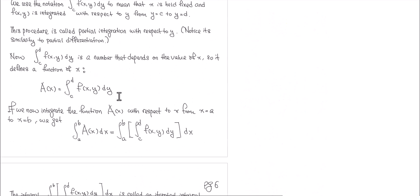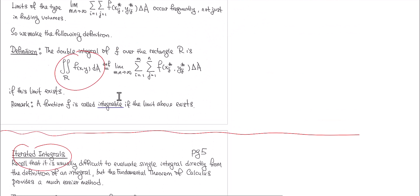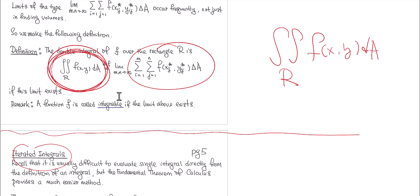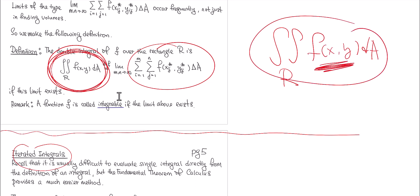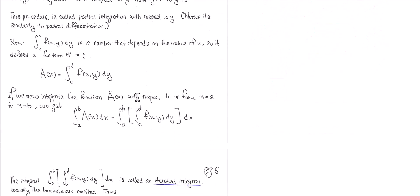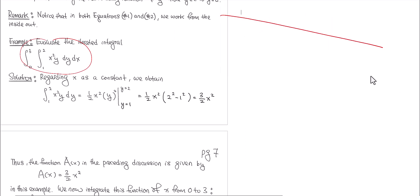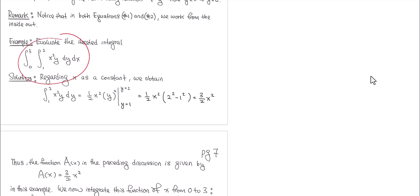Remember, the volume was given by the limit of that double sum related to the volume of the rectangular boxes, denoted as the double integral over R of f(x,y) dA. Now we're looking at a different expression: an iterated integral. Let's learn how to compute it. If you see this, what it means is you have 0 to 3, you have 1 to 2, you have x²y, you have dy, and then you have dx.